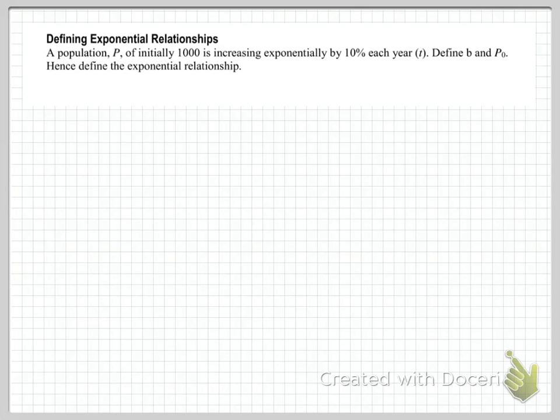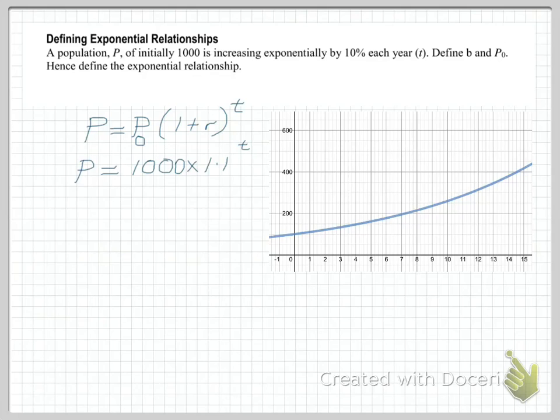Let's have a look at an example. We have a population with an initial value of 1000 and it's increasing exponentially by 10% each year. We need to define p0 and b. The initial population is 1000, and the rate is 10%, which is 0.1, added to 100%, which is just 1, we get 1.1 raised to the power of t.